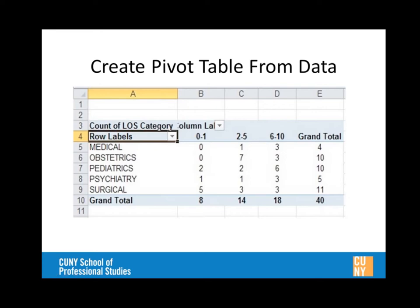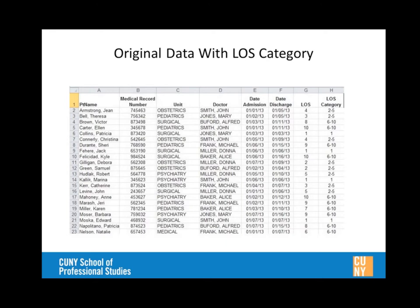Looking at the original data and its various categorizations, Mike demonstrates how to graph this data. Instead of graphing all the continuous length-of-stay variables — which could go from one to nine or more days individually — he'll graph the categorization of data in column H using the IF formula. The formula in cell H2 says: if G2 (length of stay) is less than two, call it one.